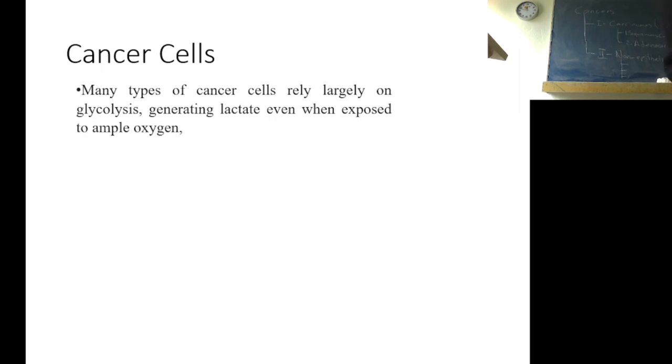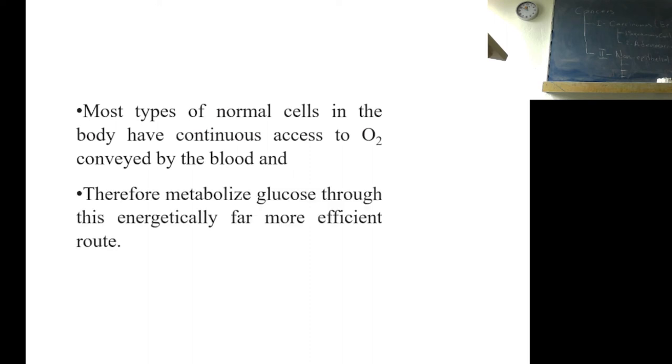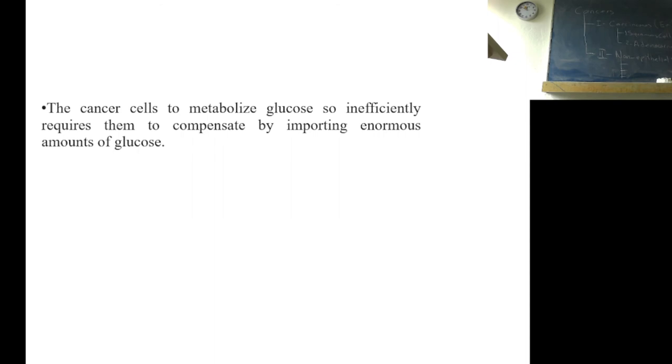Cancer cells. Many types of cancer cells rely largely on glycolysis, generating lactate even when exposed to ample oxygen. Most types of normal cells in the body have continuous access to oxygen conveyed by blood. Therefore, the normal cells are able to metabolize glucose through this energetically far more efficient route. The cancer cells metabolize glucose so inefficiently, requires them to compensate by importing enormous amounts of glucose.